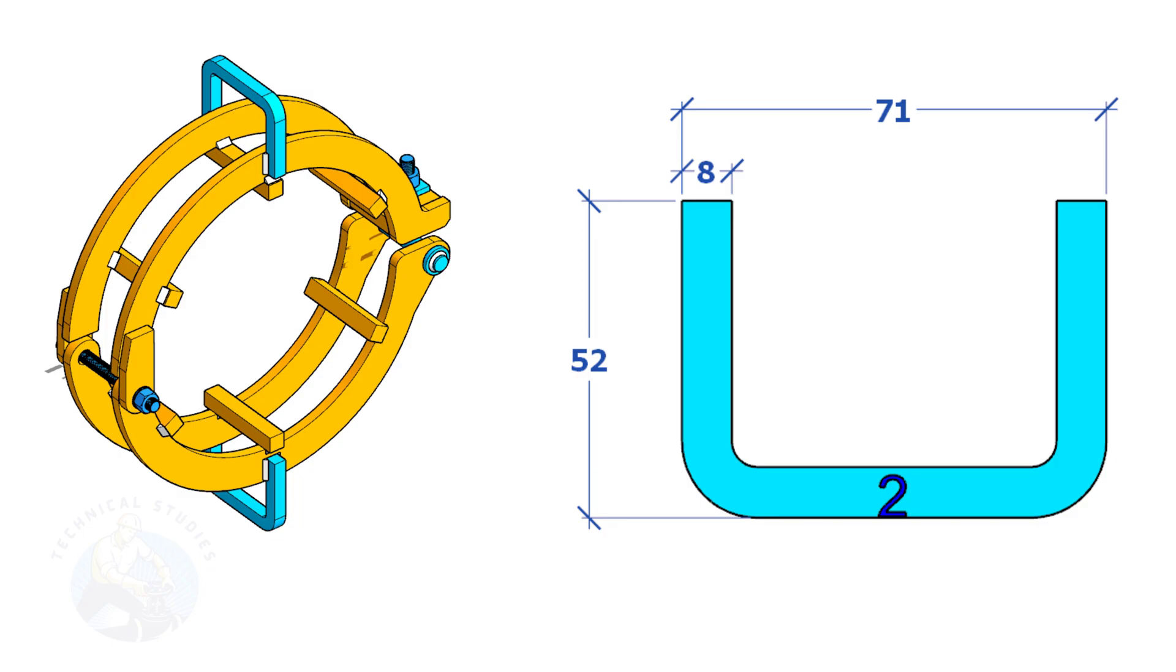For item number two, you can use square bar, round bar, or whatever material suitable for a handle. The size shall be 6 millimeters to 10 millimeters. Up to 6-inch clamps, one handle is enough.